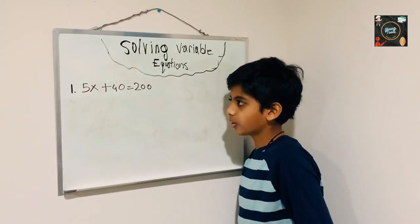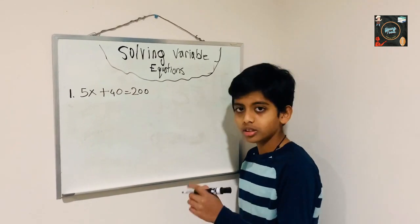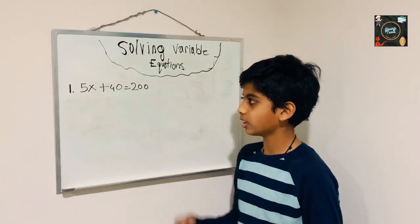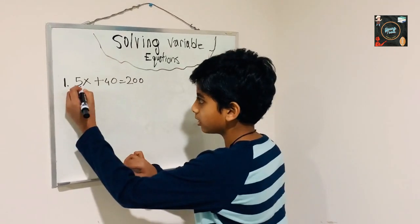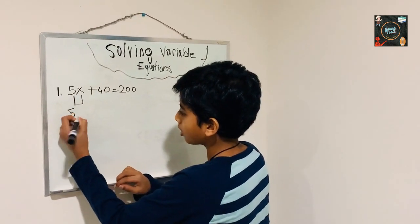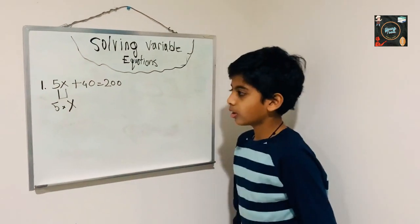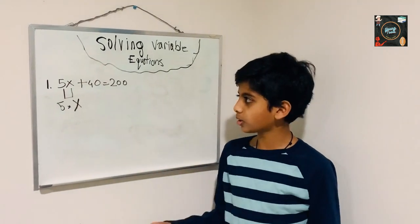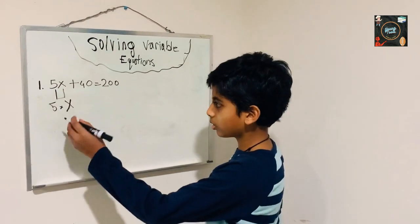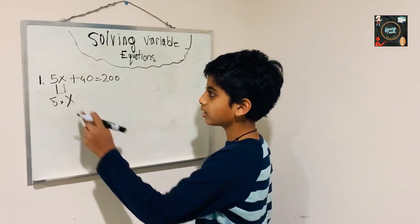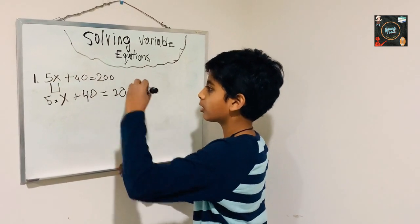Let's get into solving the first equation. The first equation is 5x plus 40 is equal to 200. What we have to do first is understand what 5x represents — 5x basically means 5 times x. Whenever you see a variable next to a number, that means the variable times that particular number. So we know that 5x is equal to 5 times x, plus 40 equals 200.